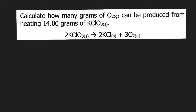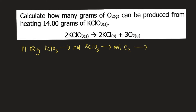To answer this question, we must do the following conversions. Starting from 14 grams of potassium chlorate, we need to convert that to moles of potassium chlorate, then from moles of potassium chlorate to moles of oxygen gas, and from moles of oxygen gas to grams of oxygen gas. So we start with 14 grams of potassium chlorate.